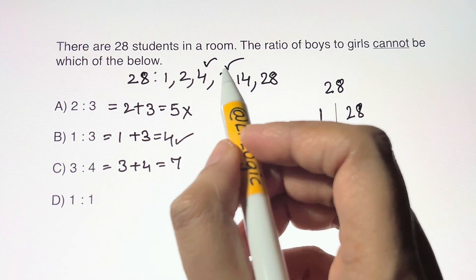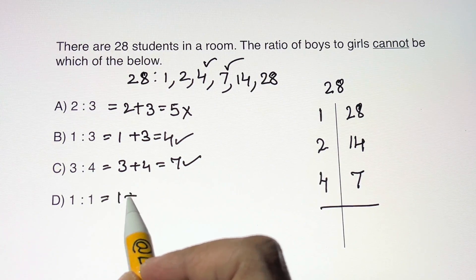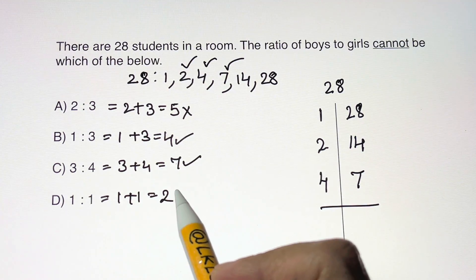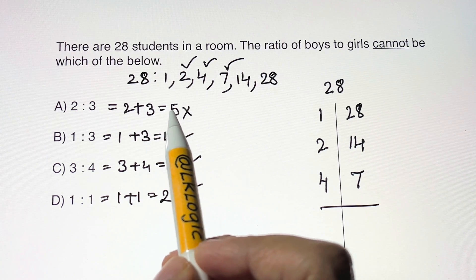And here, 1 plus 1 equals 2. Is 2 a factor here? Yes. So the only one which is not a factor is 5, so 5 is the only non-factor.